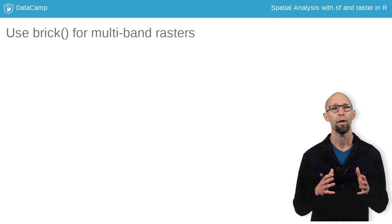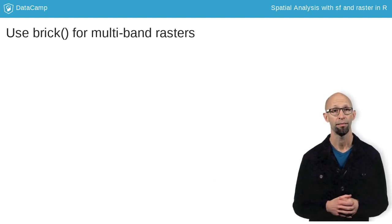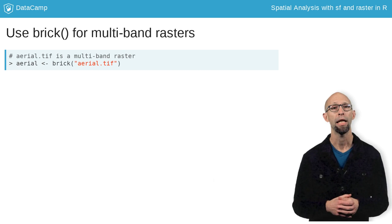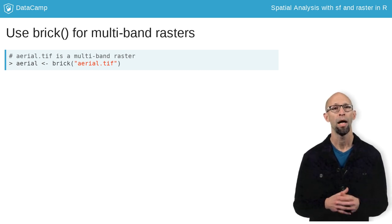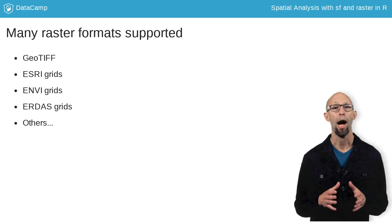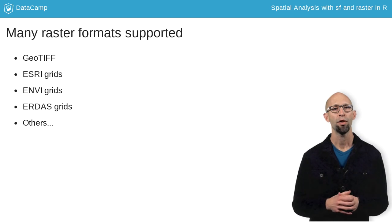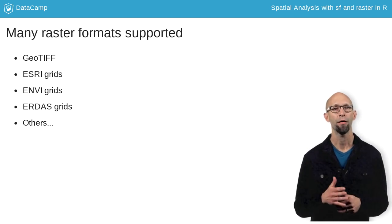In order to read in this type of raster, you'd use the brick function. Here we use brick to read in a multiband raster. Like st_read, the raster and brick functions can read in a wide range of data types and guess their type based on the suffix. In this course, you'll be reading in GeoTIFFs of New York City — one for tree canopy and one satellite image.